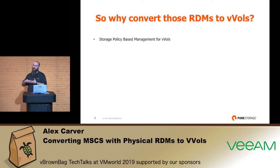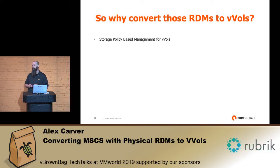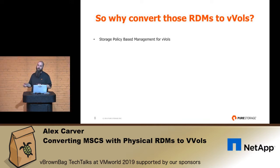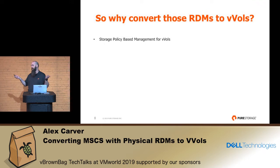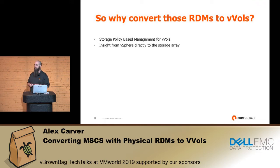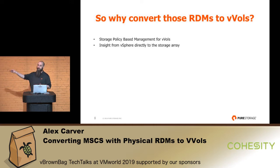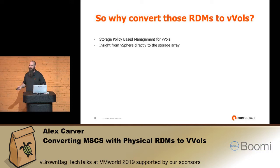This gives you a lot more flexibility as the vSphere admin to help manage that. You don't have to put in a request to the storage admin — or as a storage admin, you don't have to wait for the request from the vSphere admin to say these volumes need to go in that protection group. Rather, the storage policy automatically moves those volumes into that replication group or consistency group, whatever the vendor calls it. The other thing is insight directly from vSphere to the storage. You're going to know what the VM name is if you're a storage admin — if a volume suddenly exploded by 20 terabytes over the weekend, you know exactly what VM did it and who owns it.